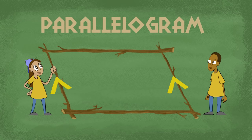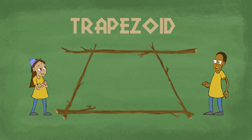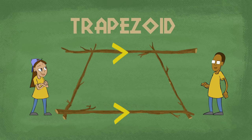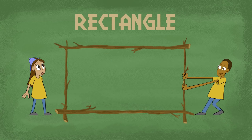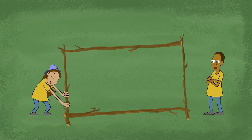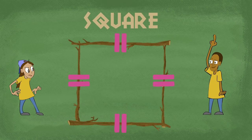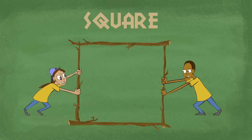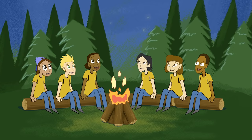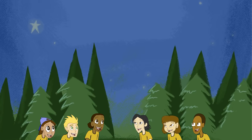Parallelograms have two sets of parallel lines. Trapezoids only have one set at a time. A rectangle has four right angles. A rhombus has four sides that are equal. Squares have four equal sides and four right angles. Quadrilaterals have four sides and four angles.